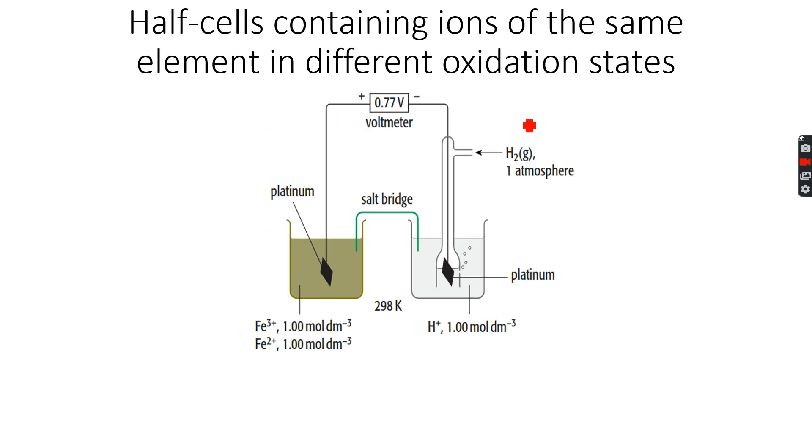Half cells containing ions of the same element in different oxidation states. Now this is a completely different ball game altogether because we have Fe3+ and Fe2+ ions in equilibrium with each other, but we don't have iron metal. So this half cell is actually Fe3+ plus electron gives Fe2+. This is a reversible reaction.